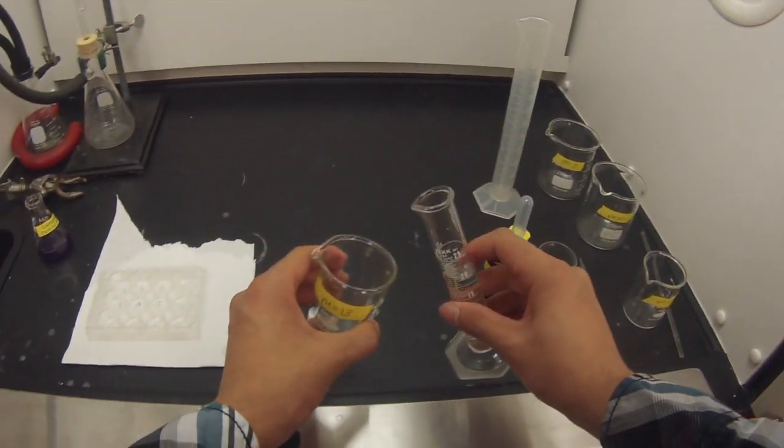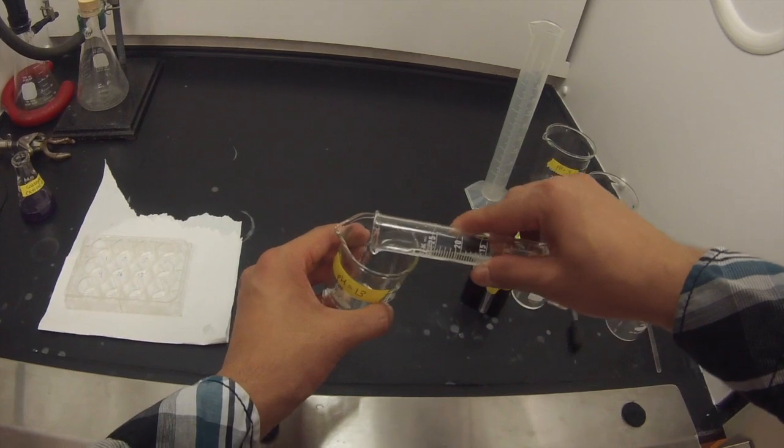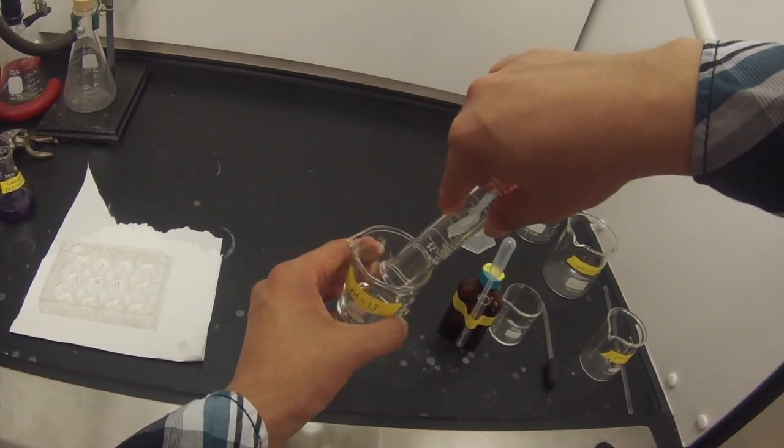Next, you'll take 20 milliliters of sodium hydroxide, add that to a 100 milliliter beaker labeled pH 13.